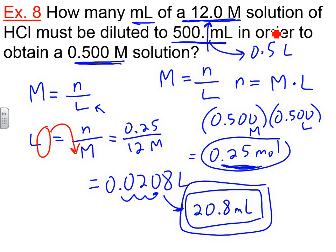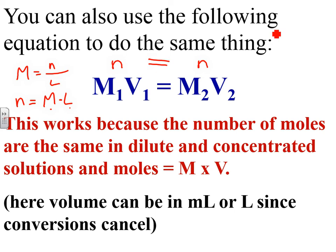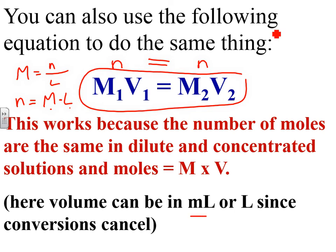There is an easier way of doing this. There's an equation you can use: M1V1 = M2V2. Because molarity is moles over liters, molarity × liters gives you moles. So M1V1 gives you moles of solution one, and M2V2 gives you moles of solution two. Since the moles are the same in both solutions, that's how we can use this equation. You can use either milliliters or liters — no matter what you use, the units cancel out.